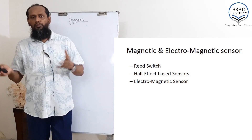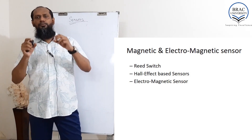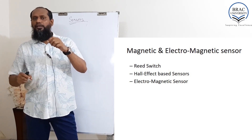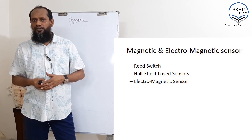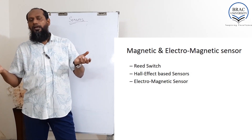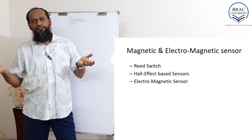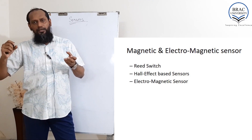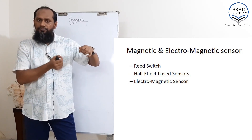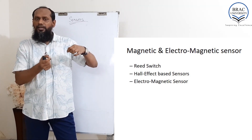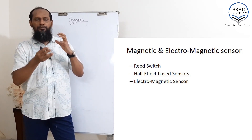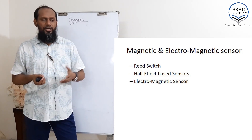You know how a generator works. If we move the magnet inside the coil, it generates electricity, and the opposite way: if there is a coil and we give electricity, it becomes a magnet. This is the main principle of the electromagnetic sensor.